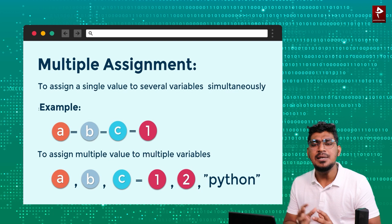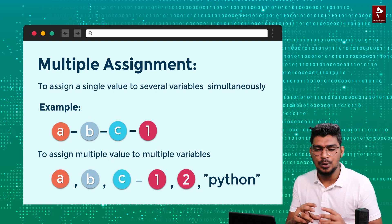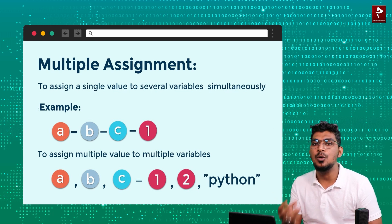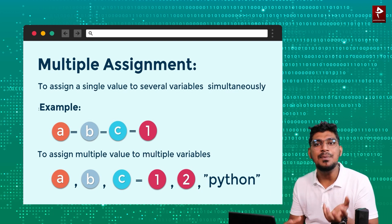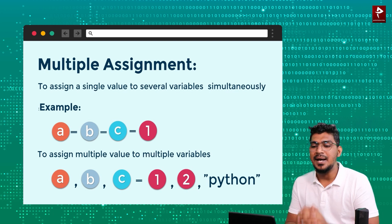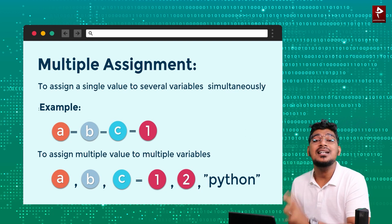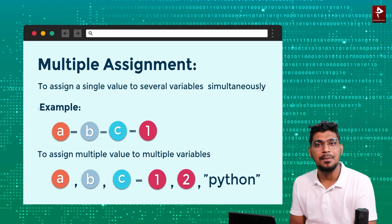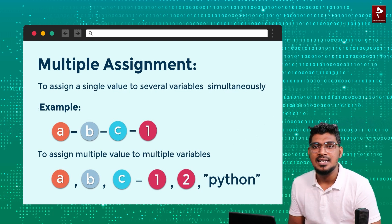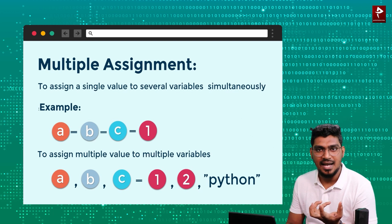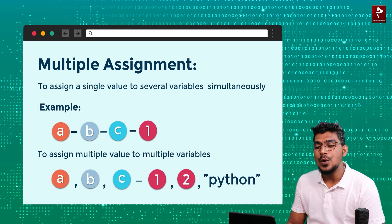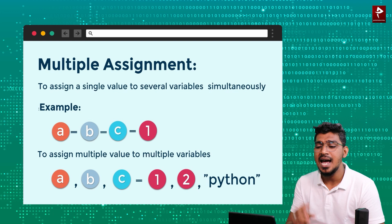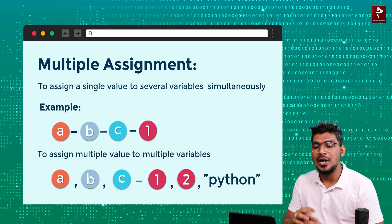The next thing is multiple assignment. So in Python, multiple assignment means: single value assigned to multiple variables at the same time, or multiple values assigned to multiple variables. For single value to multiple variables, for example: a equal to b equal to c equal to 1. So a, b, and c are variables — the value 1 is assigned to all of them.